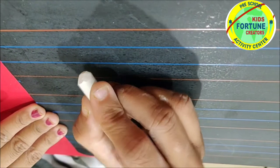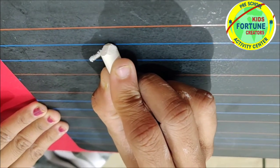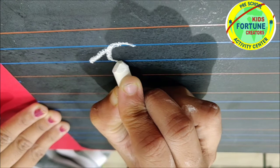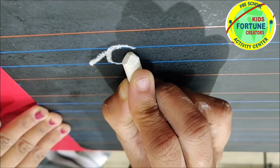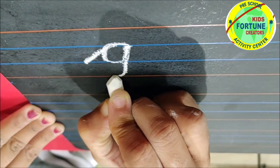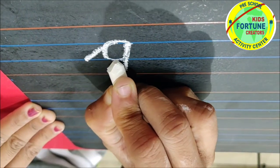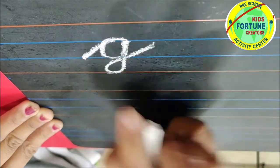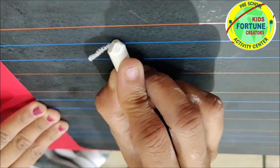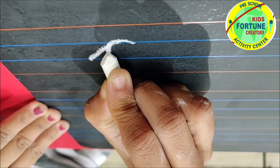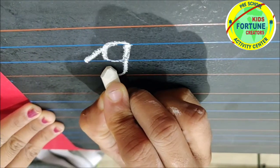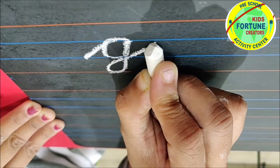G. Go up with a slant line. Move forward. Come back with a curl. Go up with a slant line. Move forward. Come back with a curl. Go up. Make a loop. Come out with a tail.